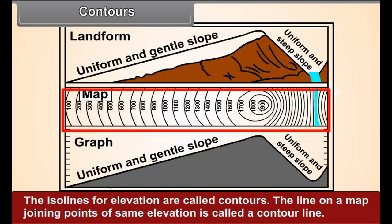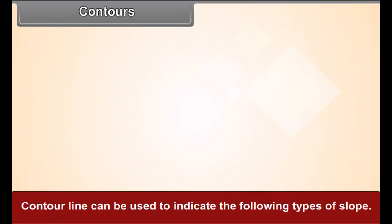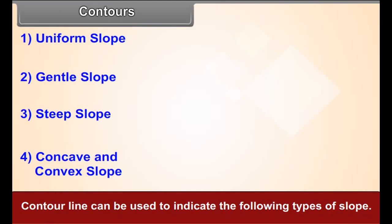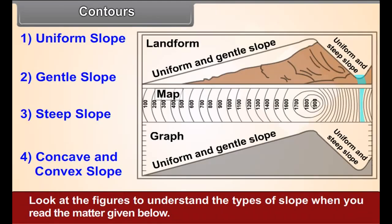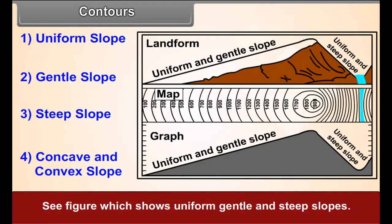Contours. The isolines for elevation are called contours. The line on a map joining points of same elevation is called a contour line. These lines collectively give an idea about the shape of a landform. They also give us an idea about the slope of the land. Contour lines can be used to indicate the following types of slope. Look at the figures to understand the types of slope when you read the matter given below. See figure 2.3 which shows uniform gentle and steep slopes.